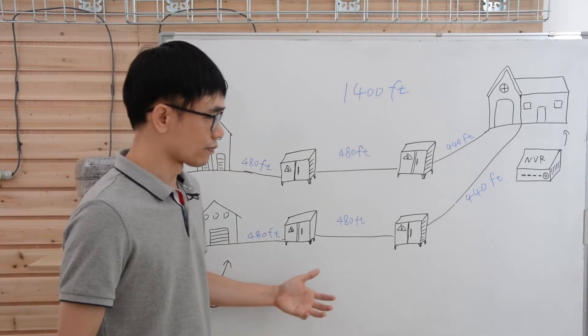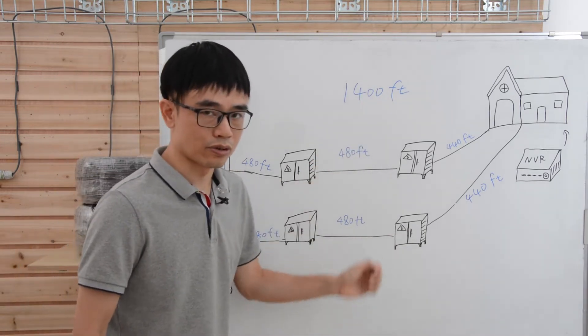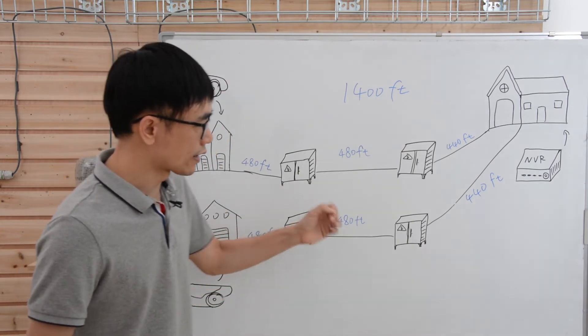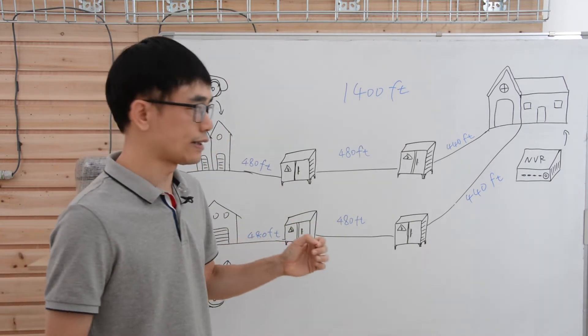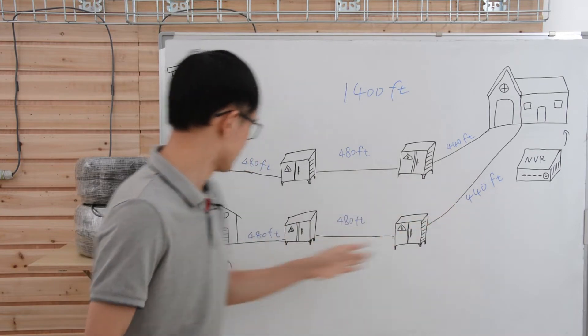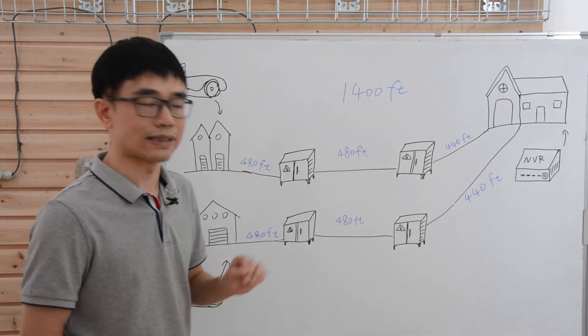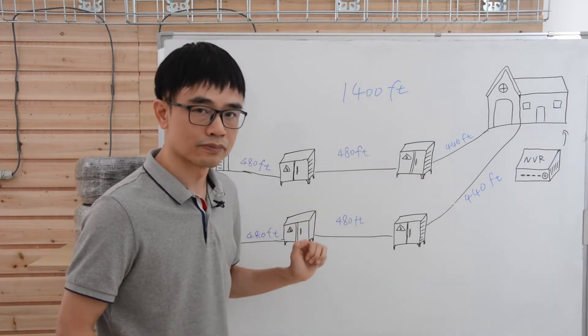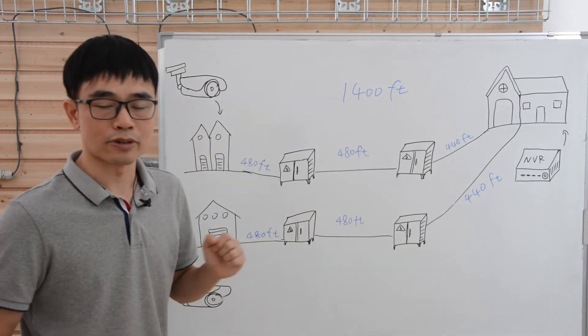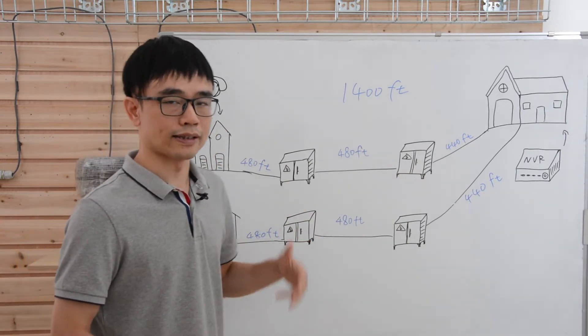Actually, we have another solution. We don't need to have all these enclosures. You can just wire a continuous run Cat5 or Cat6 Ethernet cable from the NVR to this remote location directly. There is nothing we need to place between these two. OK, now let's move to the demonstration board and see how we can get this job done.